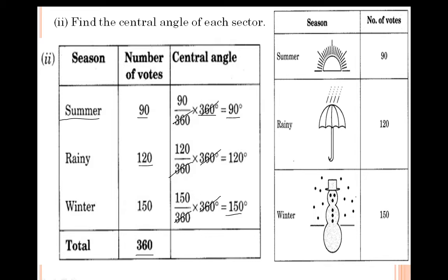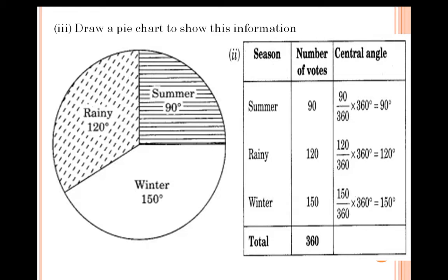With this information we have to draw a circle chart or pie chart. First draw a circle and mark the center. Place the midpoint of the protractor at the center and draw the angles using the calculated values. The summer portion is shown by slipping lines, and the rainy season by dotted lines. Winter is 150 degrees, Summer is 90 degrees, and Rainy is 120 degrees.